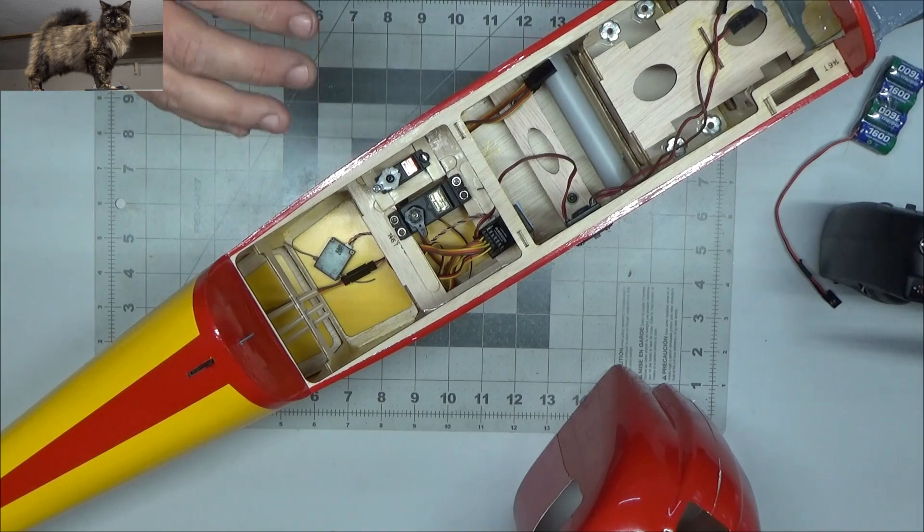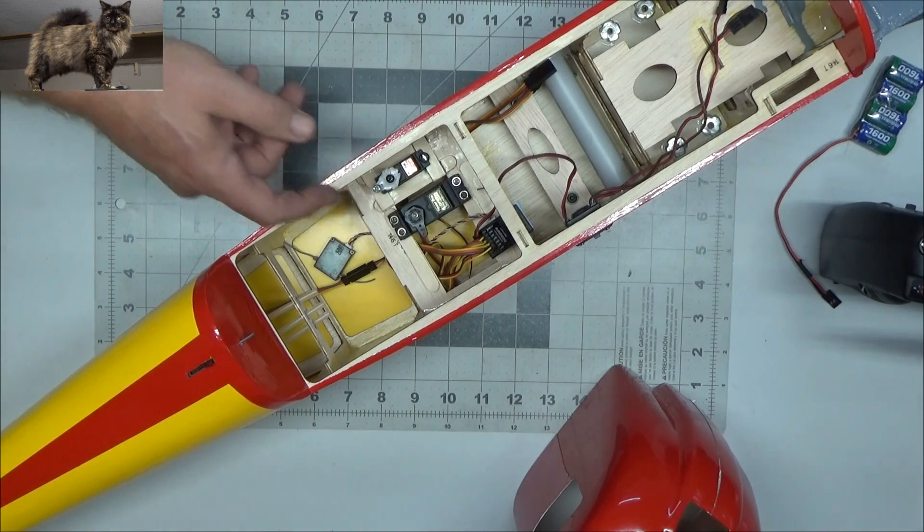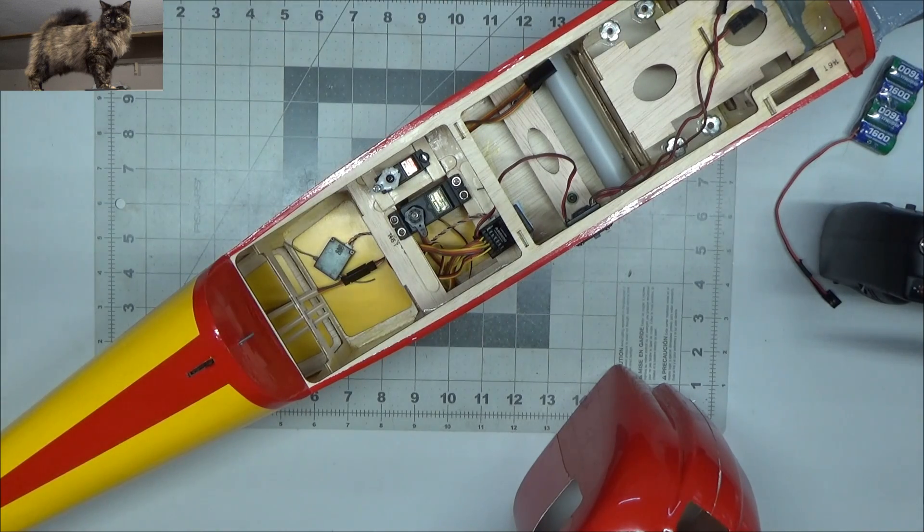But I did that just as a means to try to save some weight. Even though this is aft of the CG, I can just as easily take this out and put in a larger servo also if I need to.